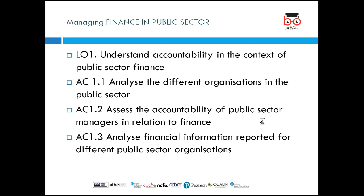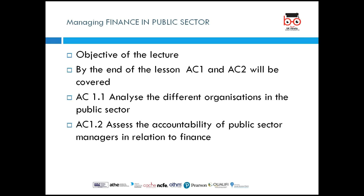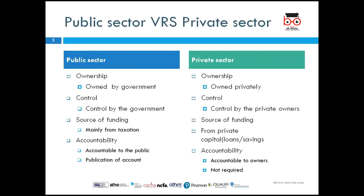Learning outcome one has three assessment criteria. AC 1.1 is to analyze the different organizations in the public sector. AC 1.2 is to assess the accountability of public sector managers in relation to finance. AC 1.3 is to analyze the financial information reported for different public sector organizations. The objective of today's lecture is to achieve AC 1.1 and AC 1.2.